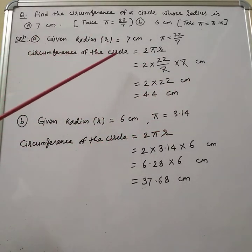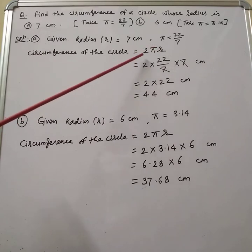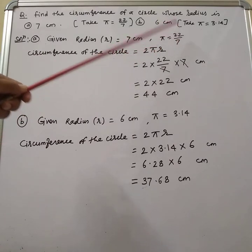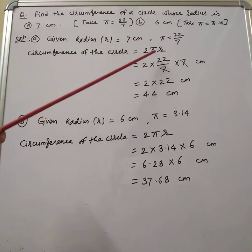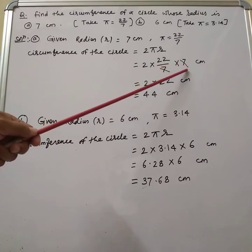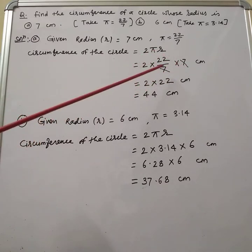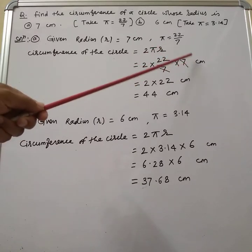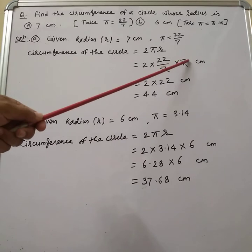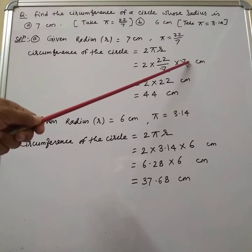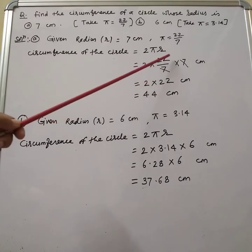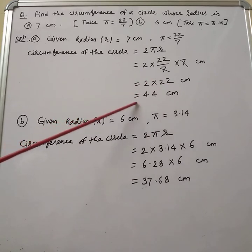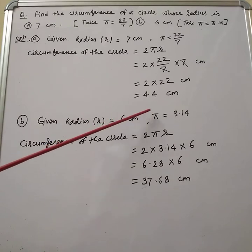Here, circumference of the circle equals 2 pi r. The value of pi is given as 22 by 7, and the radius r is 7 cm. So we get 2 into 22 by 7 into 7. We see that the 7 in the numerator and the 7 in the denominator cancel. What remains is 2 into 22, which equals 44 cm. Hence, the circumference of the circle is 44 cm.